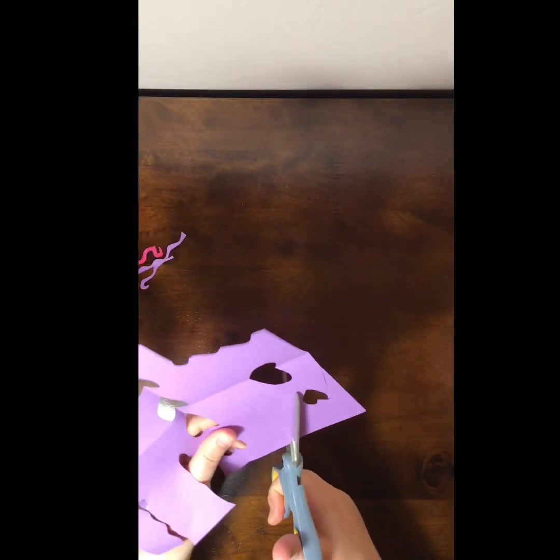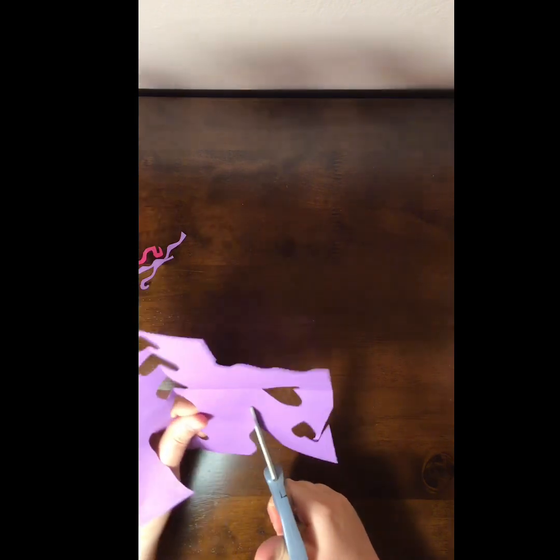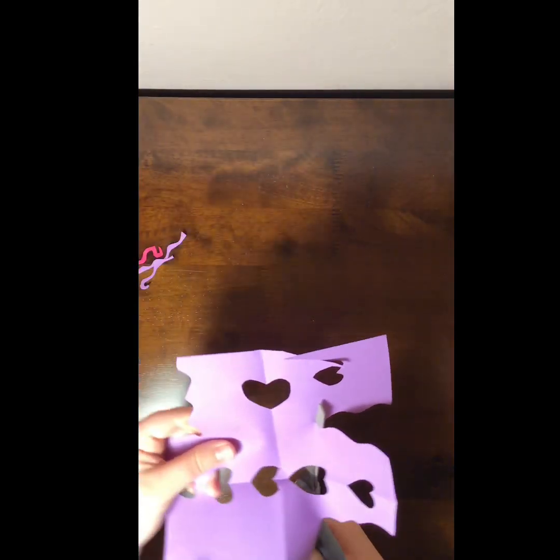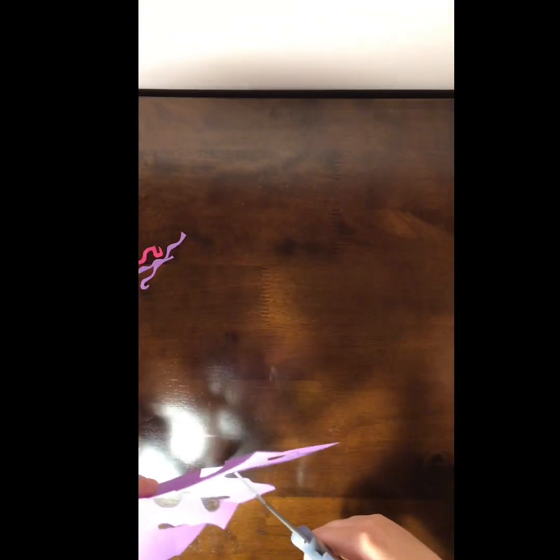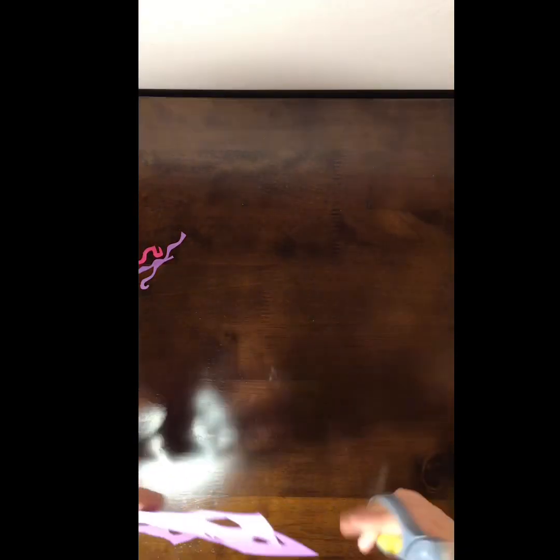So when you make the tentacles, you're going to take your paper, whatever color paper you're using, and you're going to do this kind of squiggly line motion. And at the very end, I like to do a curly Q. So that's what I'm doing here.